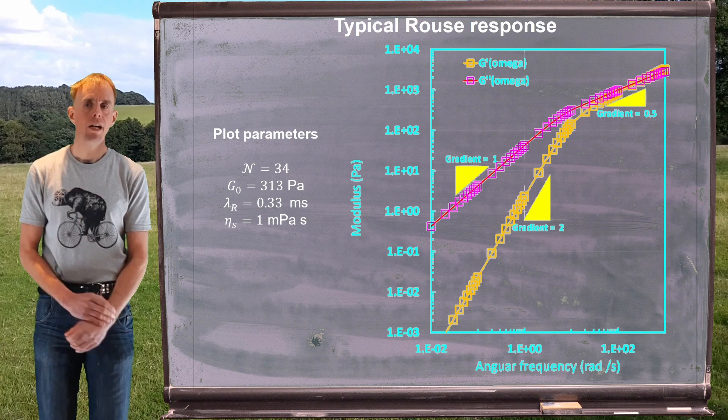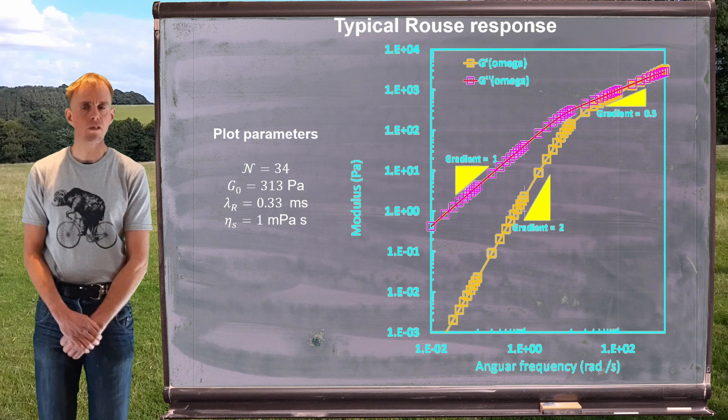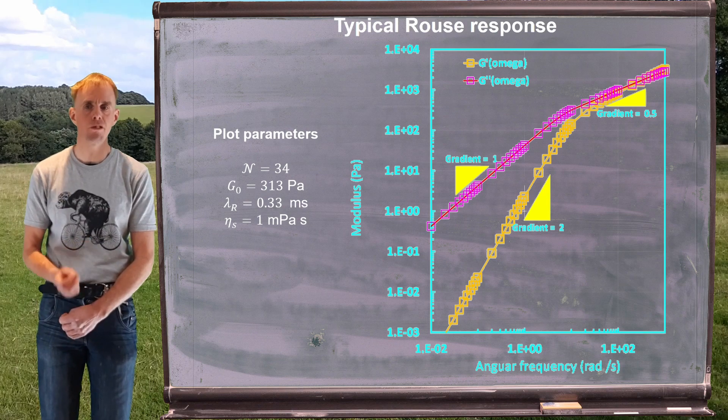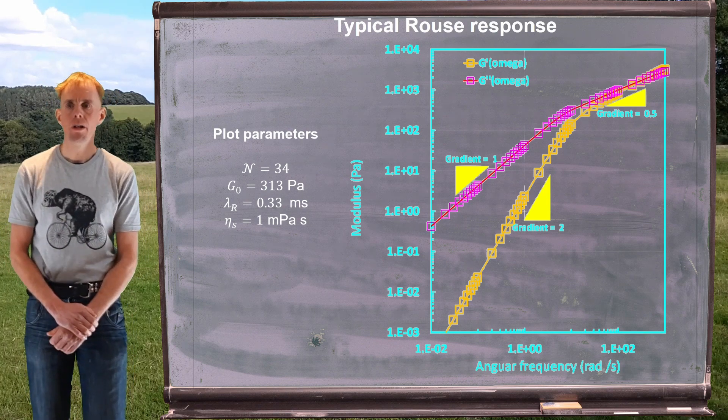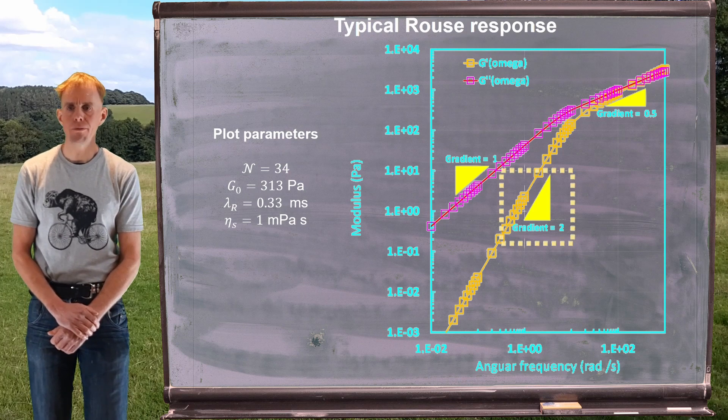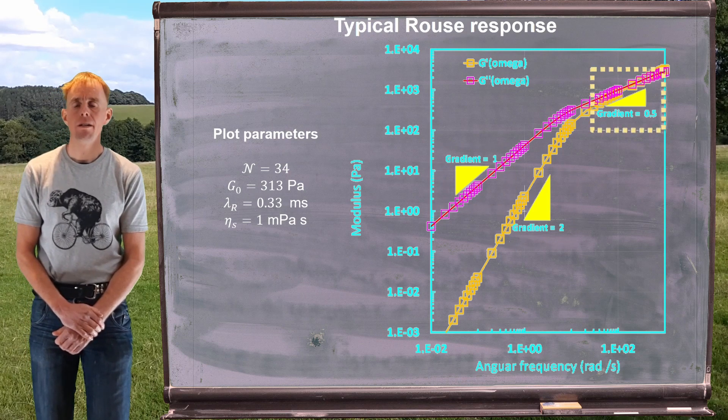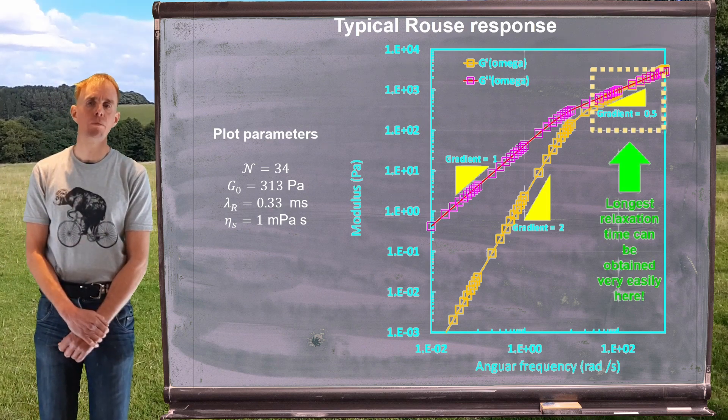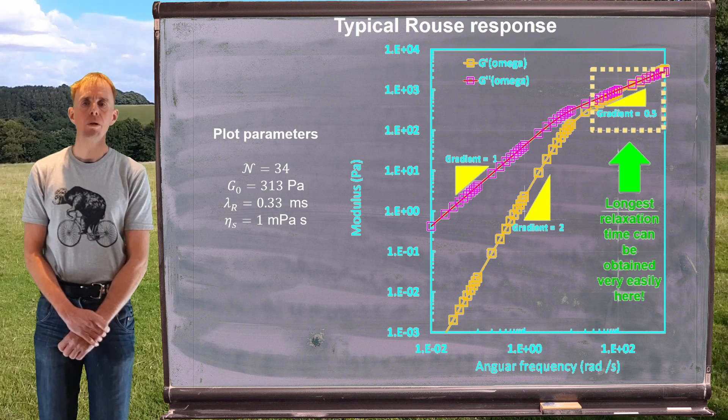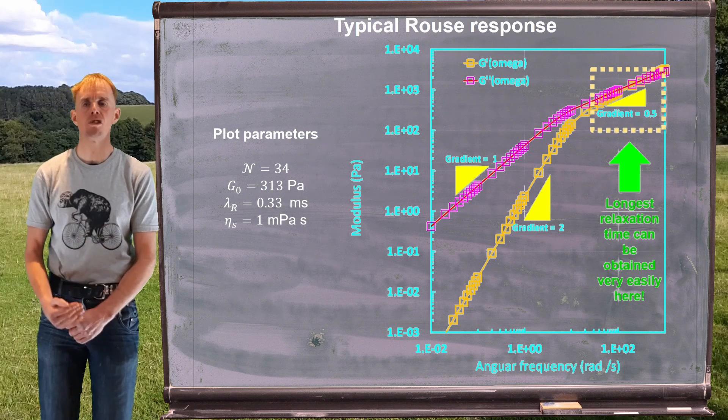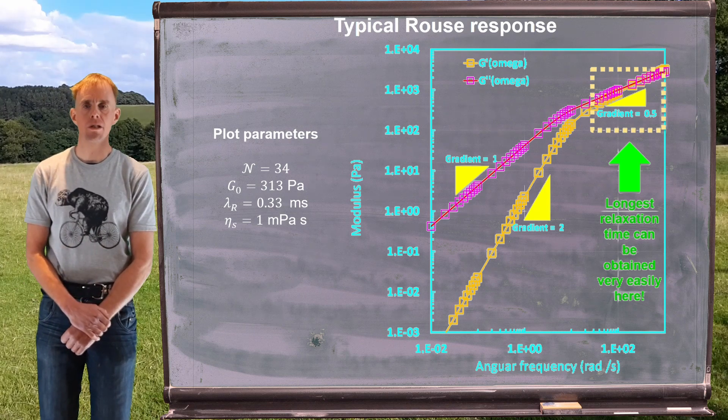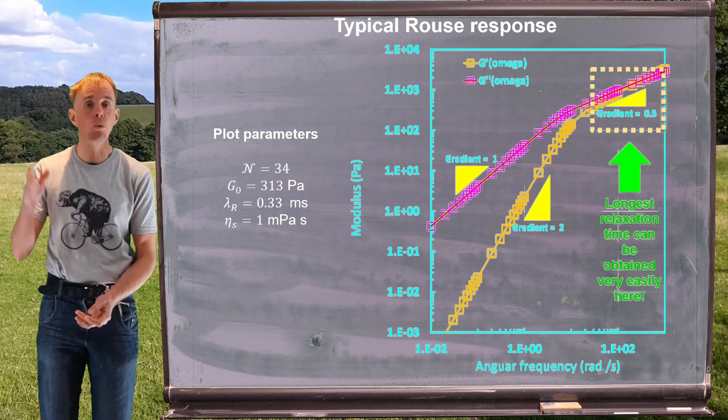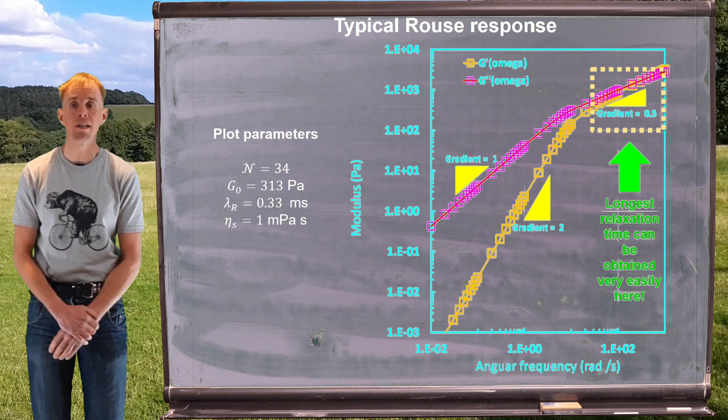If you're taking experimental measurements of G' and G'' and you end up with a plot that looks a little bit similar to this, one of the things that perhaps you might want to do is to fit the Rouse model to it and see if you can estimate the Rouse time. If we have a look at the upper region, what we find is that if we've got a clear upper region where the gradient is a half, we can gain a quick estimate of the longest relaxation time in the solution. That can be a very useful measure, since the longest relaxation time is probably going to determine how quickly stress will dissipate after a deformation has finished.